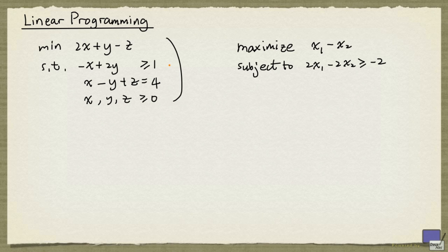The way to interpret this problem is as follows. We want to find the minimum possible value over all real numbers satisfying all these constraints. And here, we are finding the maximum value of x1-x2 over all real numbers x1 and x2 satisfying this single constraint here.